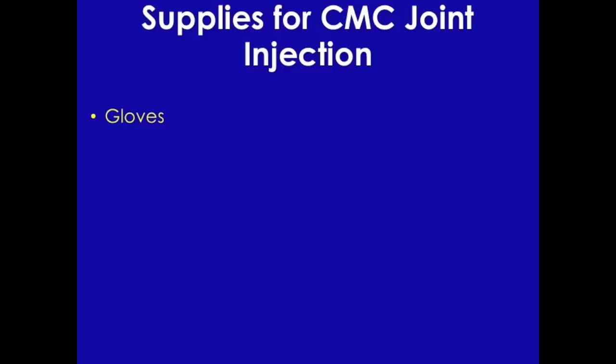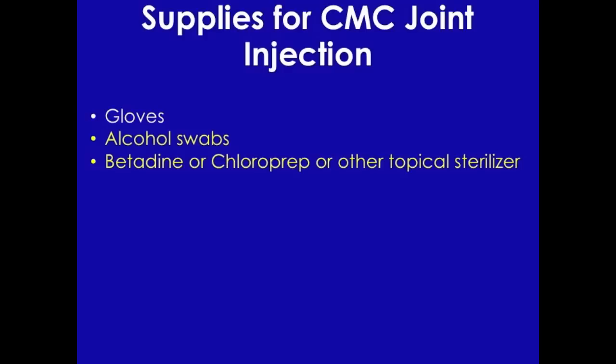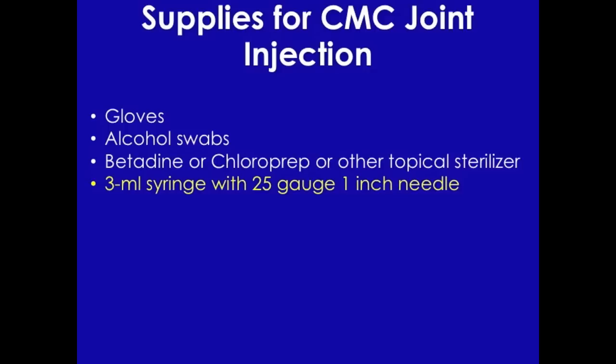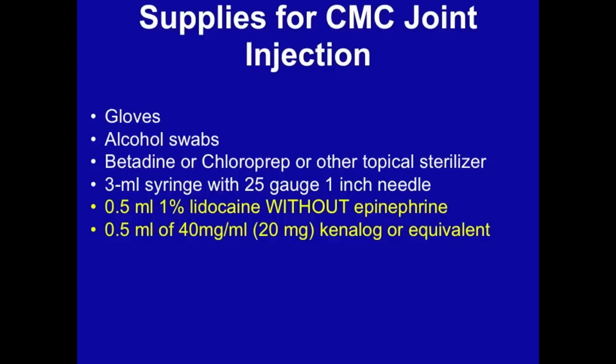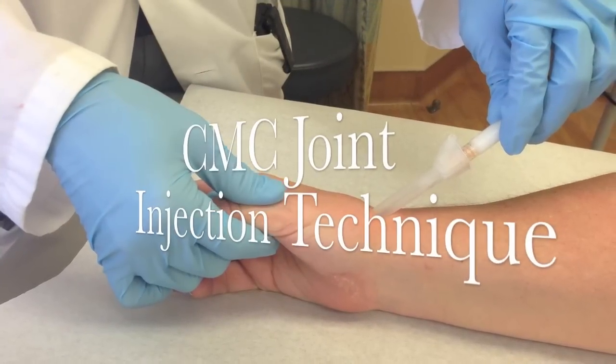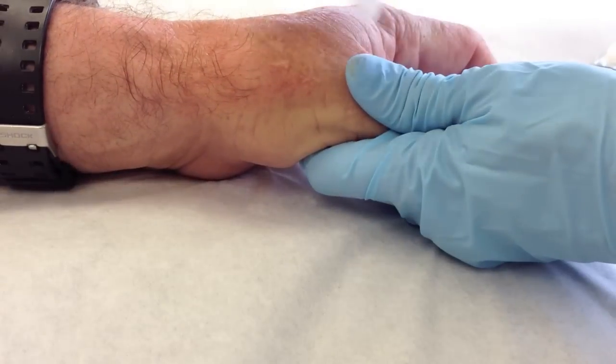Supplies for a CMC joint injection include gloves, alcohol swabs, betadine or chloroprep or any other topical sterilizer, a 3 milliliter syringe with a 25 gauge 1 inch needle, half a cc of 1% lidocaine without epinephrine, 0.5 cc's or 20 milligrams of triamcinolone suspension or equivalent. The total volume for the injection should be no larger than 1 cc, as this is a very small joint. Also needed: ethyl chloride, gauze, and a band-aid for aftercare.